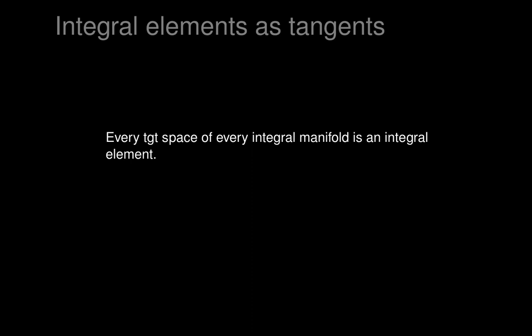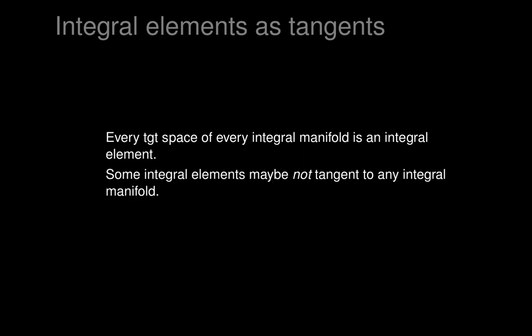What do integral elements have to do with integral manifolds? It's clear that every tangent space of every integral manifold must be an integral element, since the differential forms vanish on integral manifolds and therefore on each tangent space. So there's a relationship between finding integral manifolds and finding integral elements. Once we find integral elements, we have to thread them together into manifolds. Some integral elements may not be tangent to any integral manifold, and we want to throw those away — we're interested in which integral elements we can guarantee occur as tangent spaces of integral manifolds.